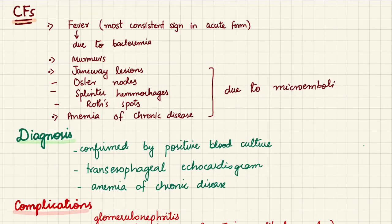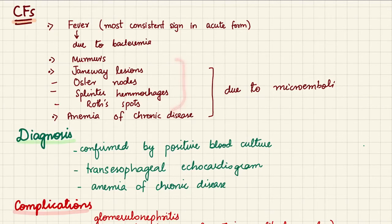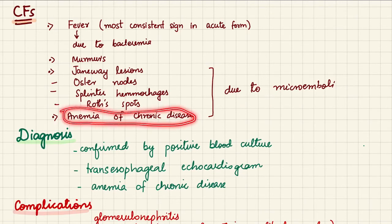One important complication is that vegetations dislodge and form micro-emboli. There are four characteristic signs due to micro-emboli: Janeway lesions, which are erythematous non-tender lesions on palms and soles; Osler's nodes, which are tender lesions on fingers and toes; splinter hemorrhages, which are hemorrhages in the nail beds; and Roth spots, which are hemorrhages in the retina.